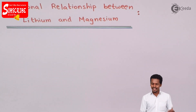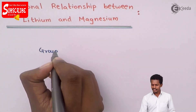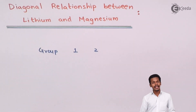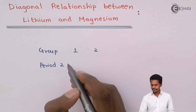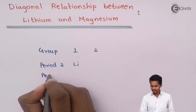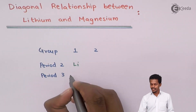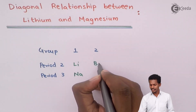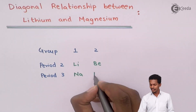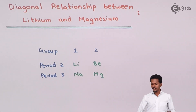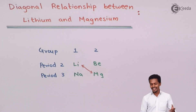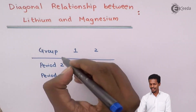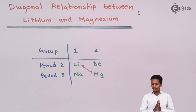Lithium and magnesium have the same properties diagonally. If you observe, group 1 and group 2 are what we are talking about. Lithium belongs to period 2, and sodium is present in period 3 of group 1. Beryllium belongs to period 2 and group 2, while magnesium belongs to group 2 and period 3. So lithium and magnesium have a diagonal relation with each other, which is why this is called the diagonal relationship. How they have similar properties is the main concern of this topic.